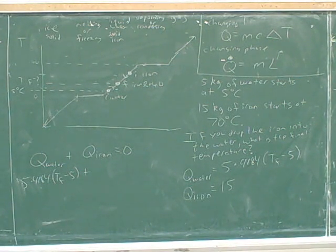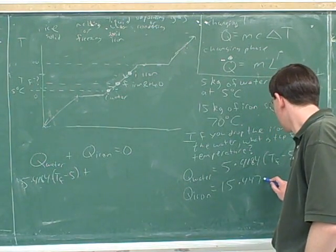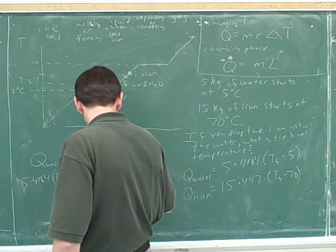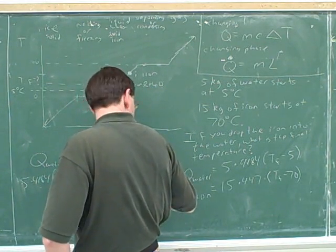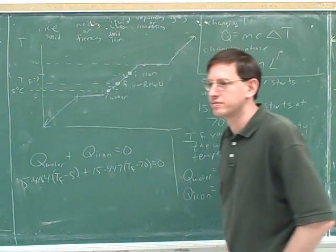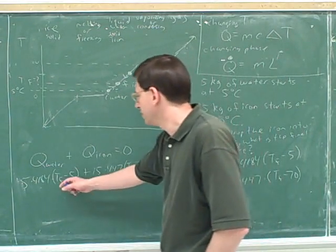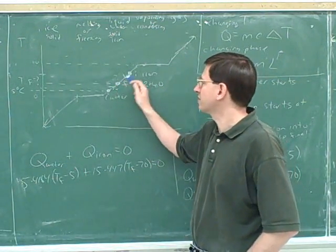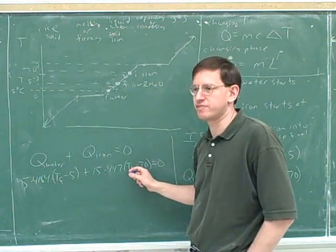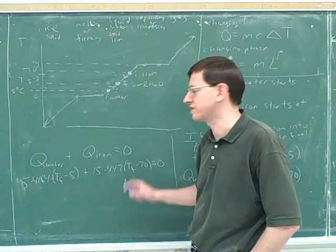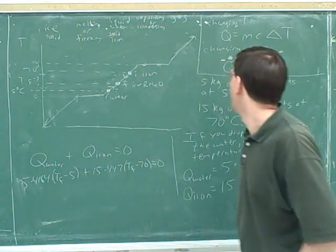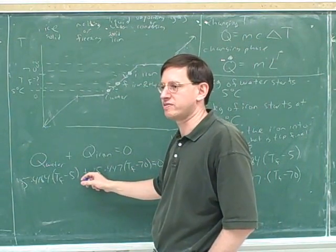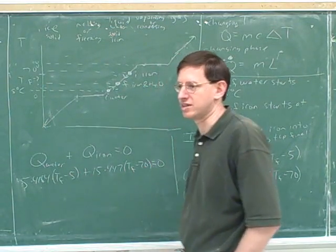All right. And now we have to figure out Q iron. The C for iron is 447. Times T final minus seventy. Good. By the way, we'll just plug that in here then. So 15, 447, T final minus 70. And that's still equal to zero. By the way, notice this is going to be positive because the final temperature is going to be bigger than five degrees. And this term is going to be negative because the final temperature will be less than 70 degrees. So as I promised, the equation is taking care of the positives and negatives for us. We don't have to plug in positives and negatives here. The equation takes care of that for us. This is going to automatically come out positive and this will automatically come out negative. This formula, you have to put in the signs. But this formula takes care of the signs on its own. So it would have been a mistake to put an extra negative sign here. We don't want an extra negative sign here because the formula is already coming out negative because T final here is less than 70.